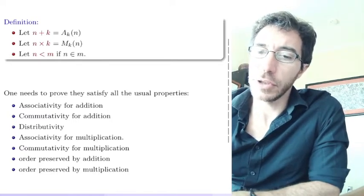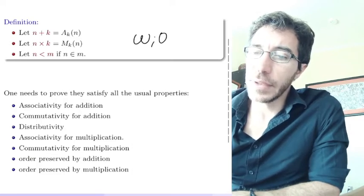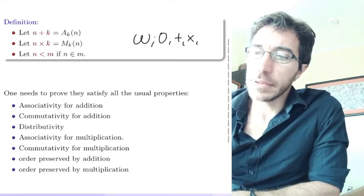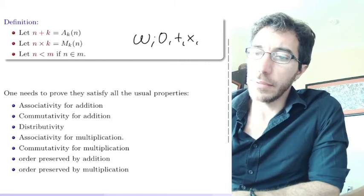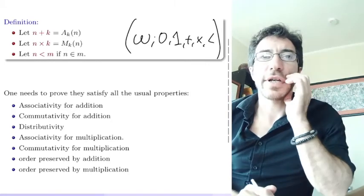That gives us all we want. So we have the natural numbers, we have a zero, we have plus, we have times, and we have less than, and I guess we have one. That's the standard model of the natural numbers.